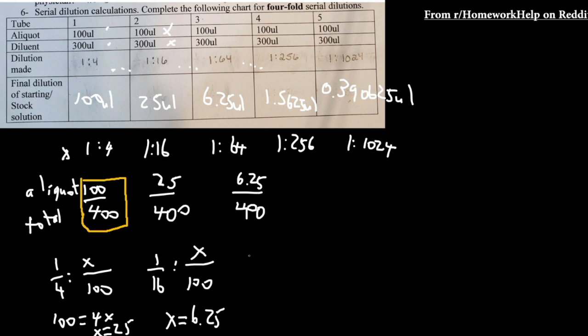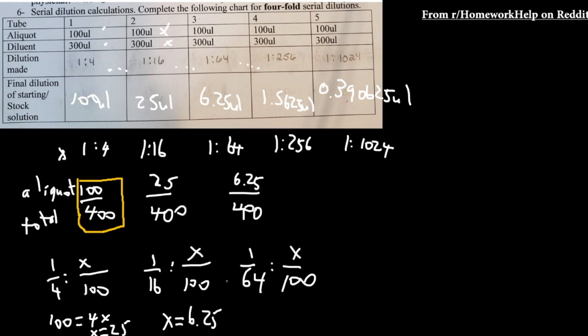And then it's a 1 to 64 ratio by x over 100. After you cross multiply and solve for x, you're going to get x equals 1.5625.